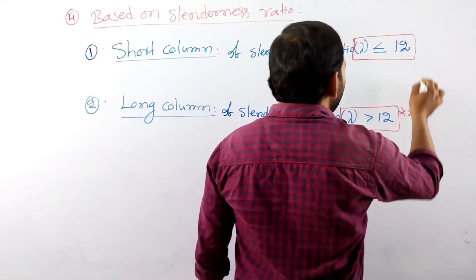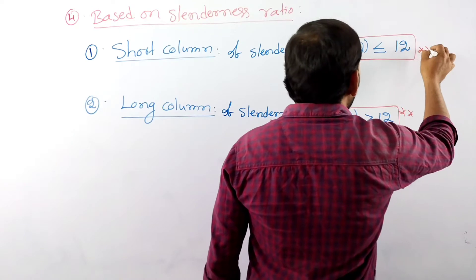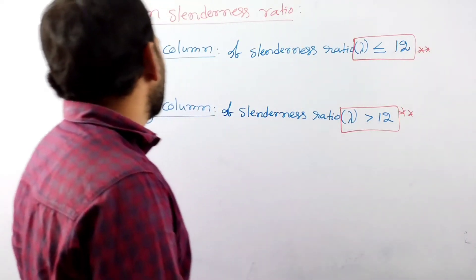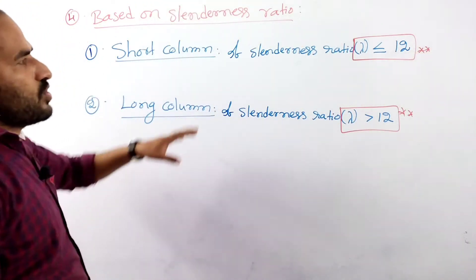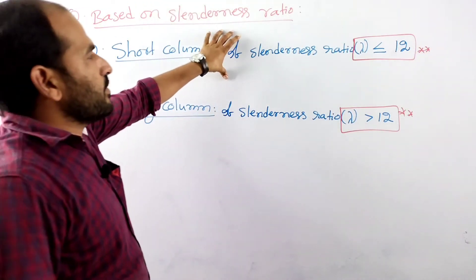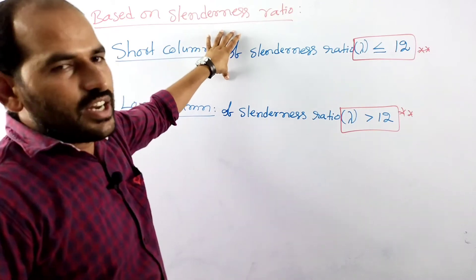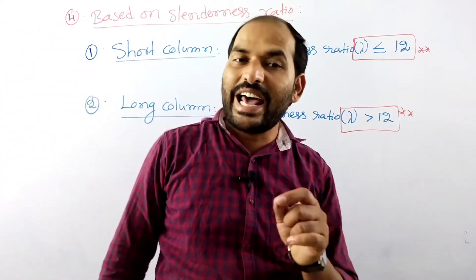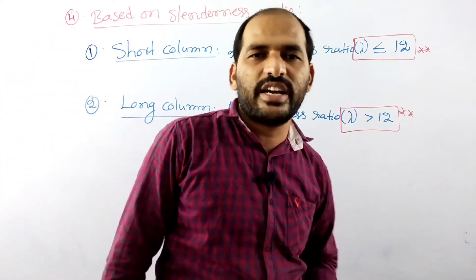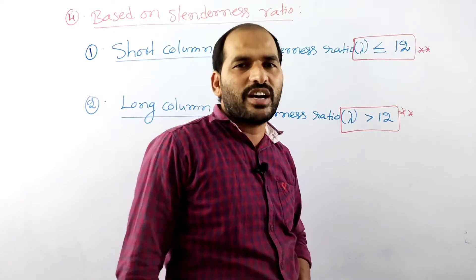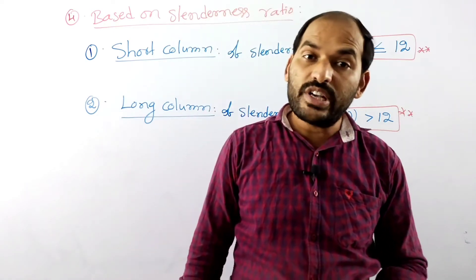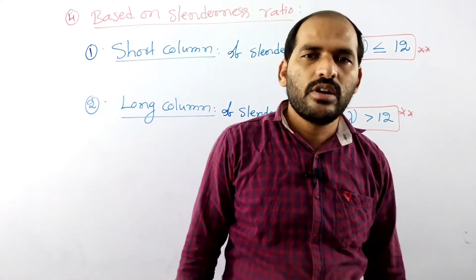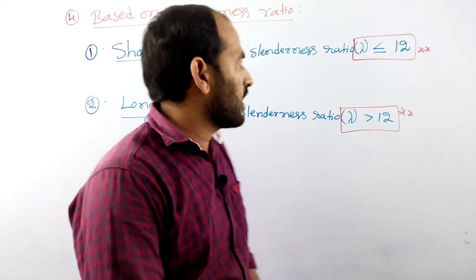This is a very important point and a previous examination question. Short column: slenderness ratio less than or equal to 12. If the slenderness ratio is more than 12, it is called a long column.